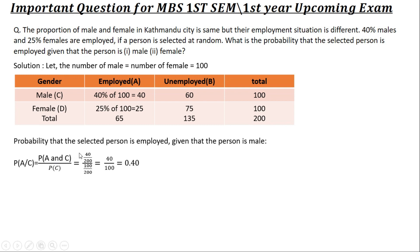Using the formula P(A|C) = P(A and C) divided by P(C). P(A and C) equals 40 out of 200. P(C), the probability of being male, is 100 out of 200. So P(employed | male) = 0.40.